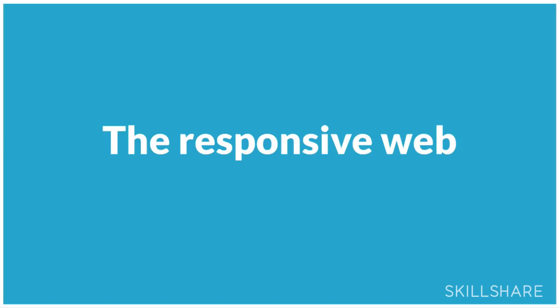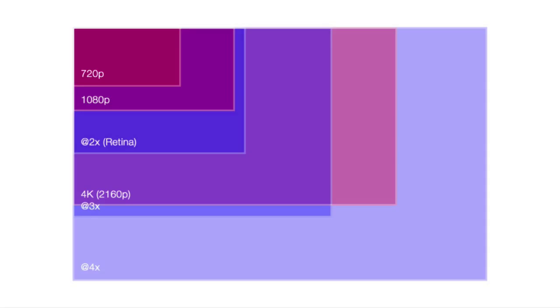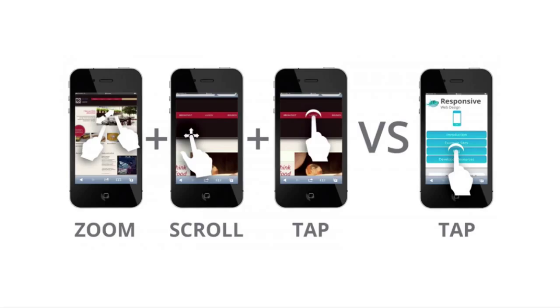So what is this responsive web? Basically, when we started having a million different devices to design for, we started realizing that the things which looked good in our desktop layouts did not necessarily translate well into mobile. A beautiful gridded desktop website required a zoom, a scroll, and a tap to get to just the next page. Responsive web design — reflowing our layout to fit the container — could make things just one click away.